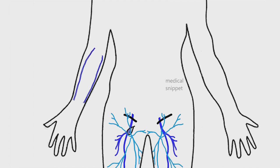The deep system of the upper limb is formed by the ulnar veins and radial veins in the forearm, which join to form the brachial veins.